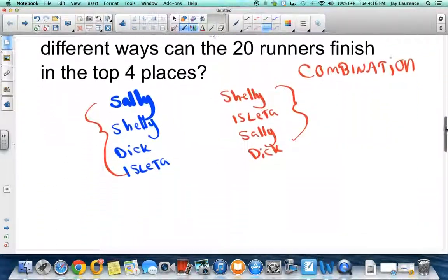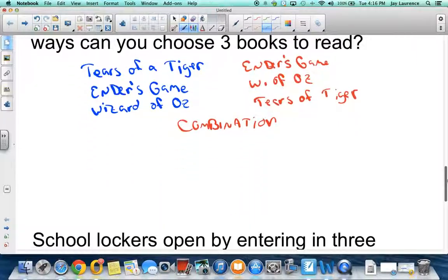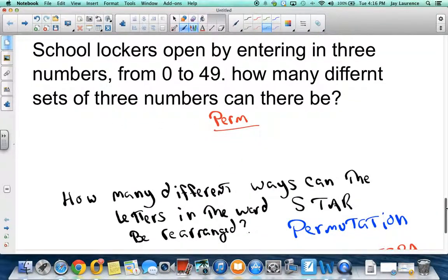Now, if you paid attention yesterday to the fundamental counting principle, you know that you should multiply those three numbers together, and you will get 720 different ways. Two of the ways are listed here, but there's 718 other ways. Now, I'm not going to do the combination yet. I'm just going to go through and do the permutations.